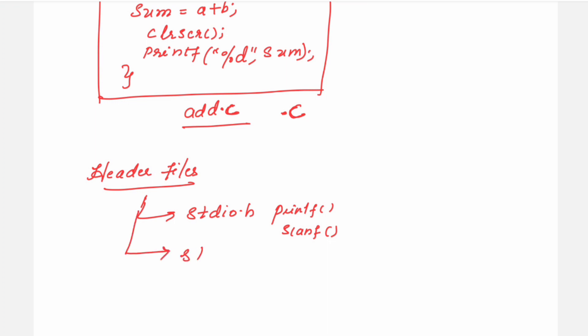The second one is stdlib.h, standard library.h. Now this is mainly used for miscellaneous functions. For example, communication with the environment, you are using exit. It will exit from the program. To abort the program, you are making use of this.